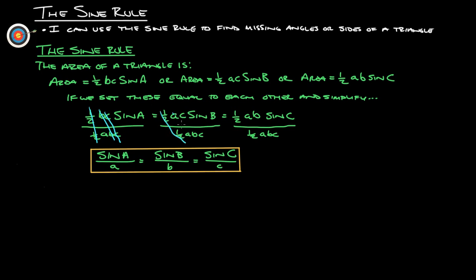This one here, the halves, the A's, and the C's, and you've got sine B over B, and then this one, we end up with sine C over C. So this is simply the sine rule, sine of any angle over its opposite side, should equal the sine of any other angle on the same triangle over its opposite side.